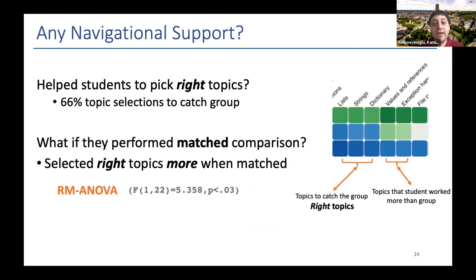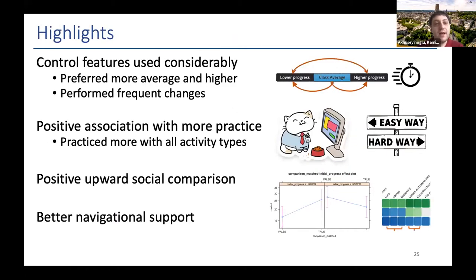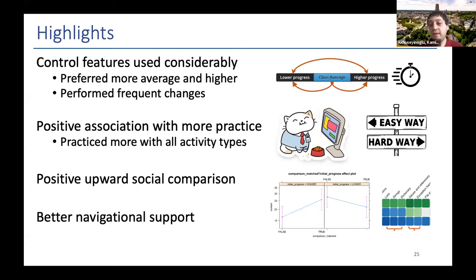We also checked whether these new features added to open social learner modeling provide navigation support. We found that when students perform the comparison — meaning they find their comparison group within the session — they navigate to the right topics they need to catch up on significantly more compared to other sessions. To summarize: the control features were used considerably throughout the semester; students perform more practice if they also performed a social comparison event; there is a positive effect of upward social comparison on engagement; and the new control features help students find better topics to practice.